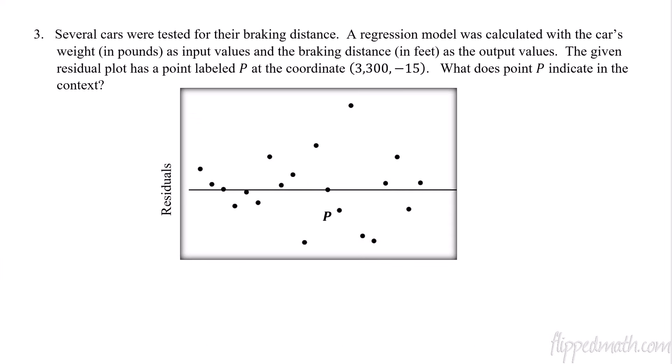There's another way of using these residual plots to answer some questions. This is a good question. This really helps to know, do you understand what a residual plot is? So here we have some cars that are being tested for their braking distance. You've got a regression model. It doesn't say what type of regression model, but we don't need to know. So you've got the weight of the car as the input and the braking distance in feet as the output. So we have a given residual plot. It's got one point labeled p with this coordinate point. 3300, negative 15. What does point p indicate in the context of this problem?